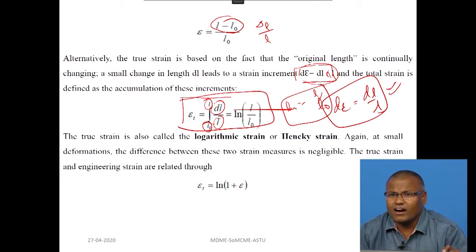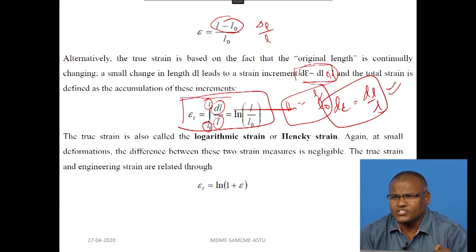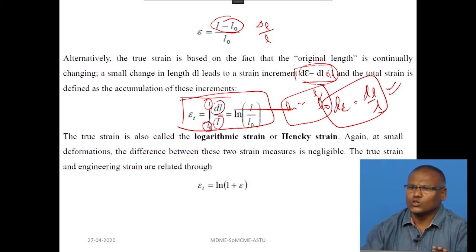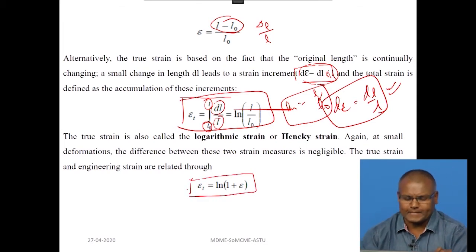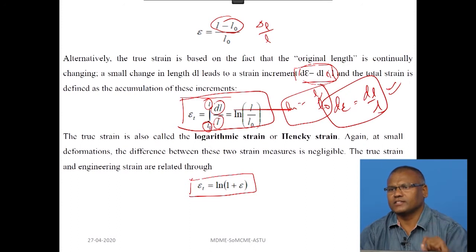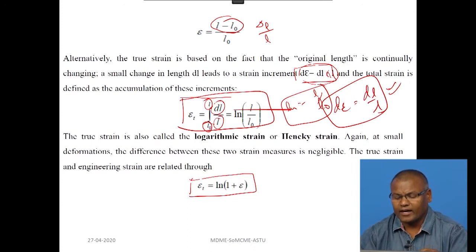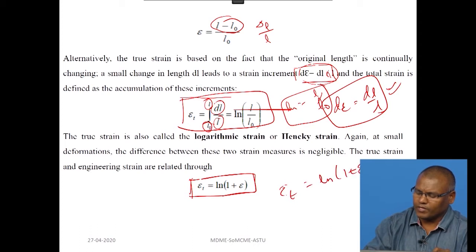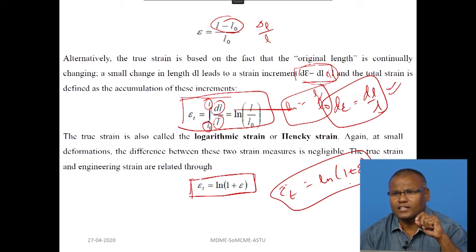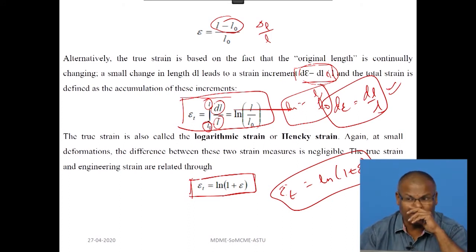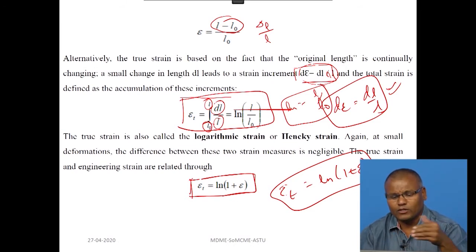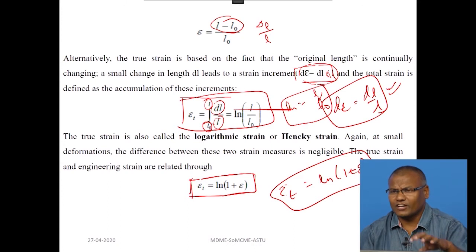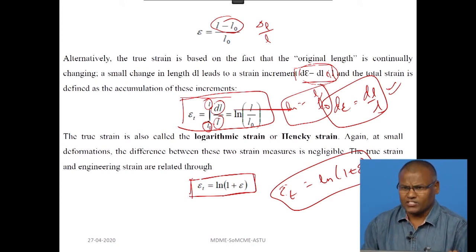This is called the logarithmic strain or Hencky strain. There can be many small strains, and when the small strains are present, we can neglect them. Finally, we can derive the true strain as ln(1 + e), where e is the engineering strain. So true strain and engineering strain are related through: epsilon_t = ln(1 + e). These are all fundamental concepts for plastic deformation behavior, and the theory of plasticity is explained through these fundamentals.